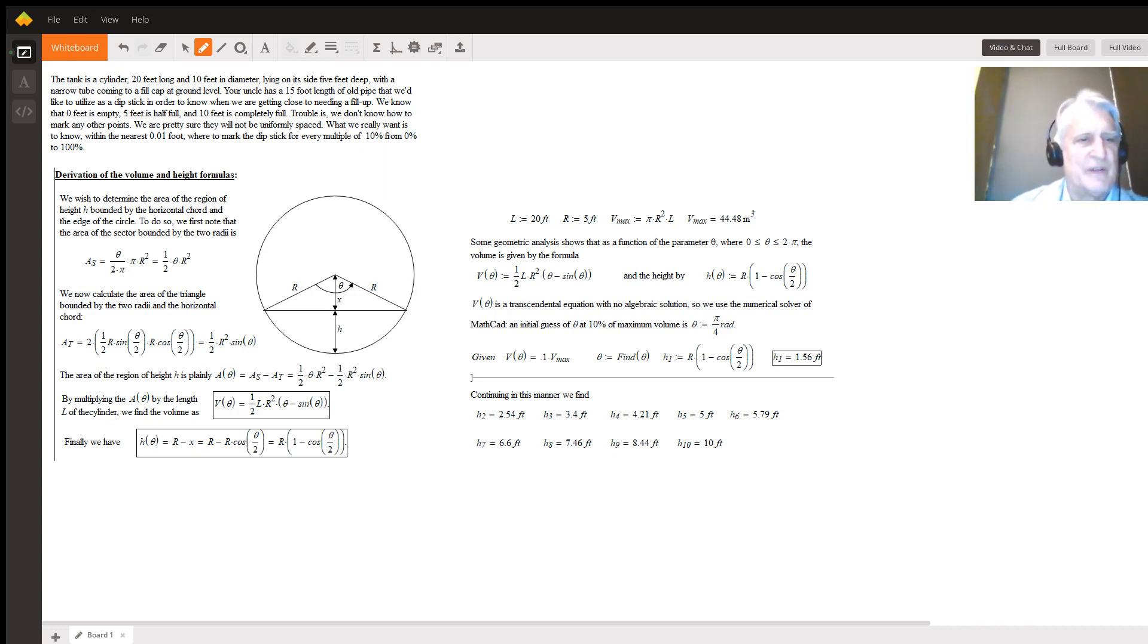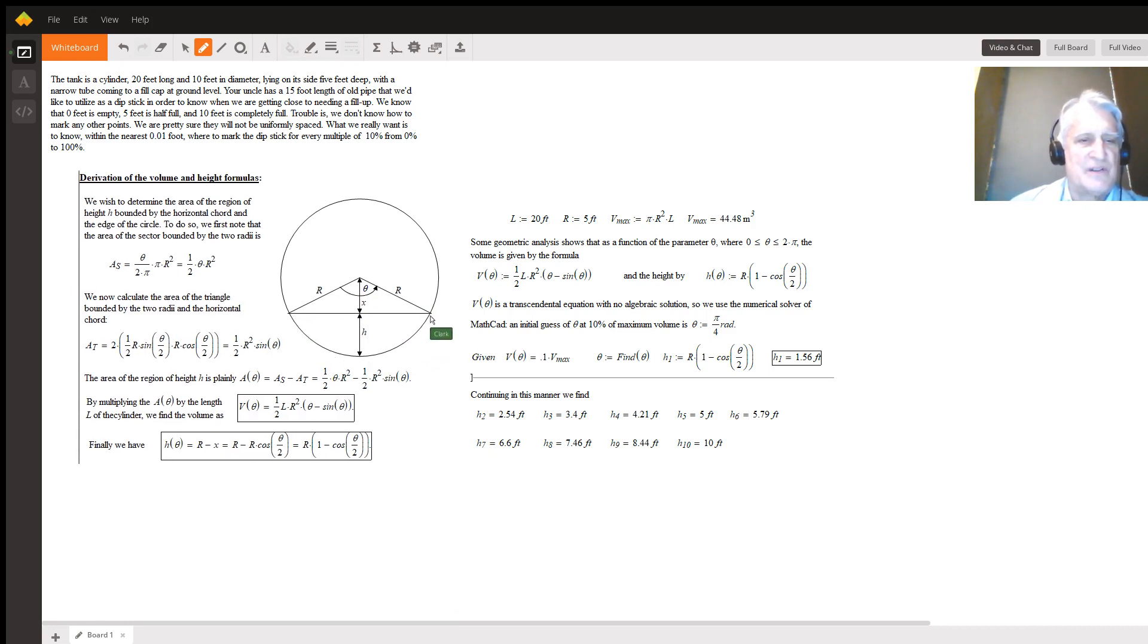The first thing we have to do is determine the volume at a given height of liquid or fluid in the tank, which is this h, and this is a cross-section of the tank. To do so, we're going to find the area of this sector here, which is determined by these two radii and the circle, and then find the area of this triangle and subtract it from the area of the sector in order to find this area here, which is the height of the fluid in the tank.